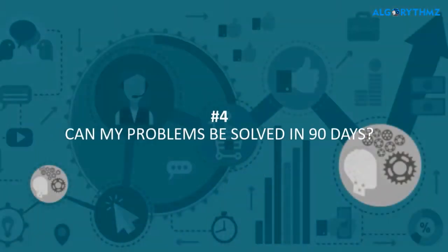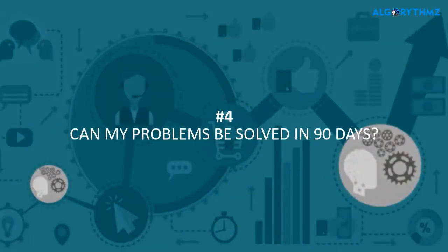Question number four: can my problem be solved within 90 days so I can realize outcomes quickly? That is a very important aspect, because a lot of projects want to see if a business problem, or part of it, can be solved within 90 days so they can map it with their organization's strategy to make sure this is the right path.